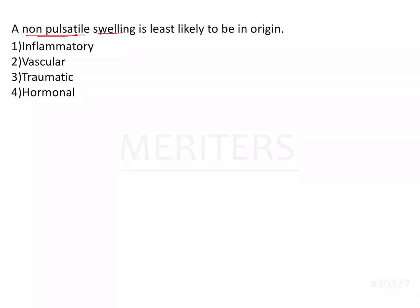A non-pulsatile swelling is least likely to be which of the following in origin? A swelling is any projection or protuberance seen on the surface of the body, and it can be because of various causes. It could be because of some trauma, it could be because of inflammation, or it could be because of a tumor which would be benign or neoplastic.